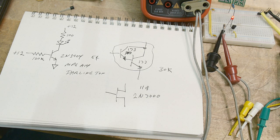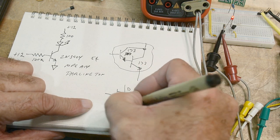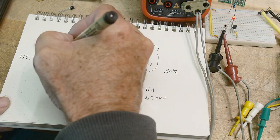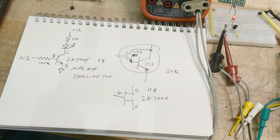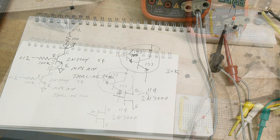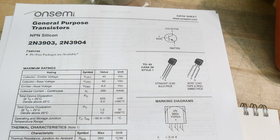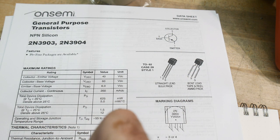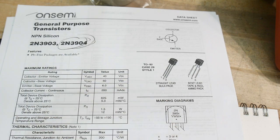The way you hook up the 2N7000 is drain here, source here, and gate here. Over here with the BJT we have collector, emitter, and base - so they're basically pin compatible. Now let's look at some datasheets. This will be a good exercise to figure out what's really important - datasheets are kind of big and confusing. The first one we're looking at is the 2N3904.